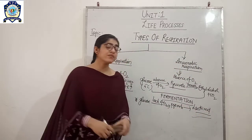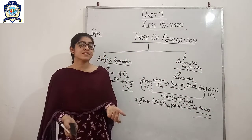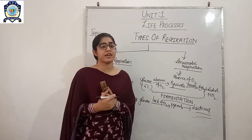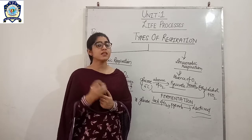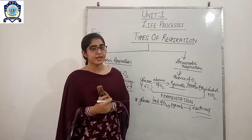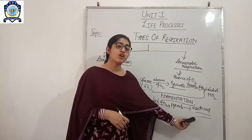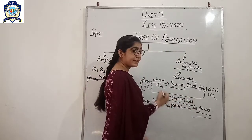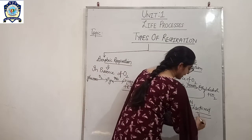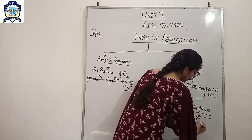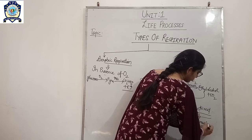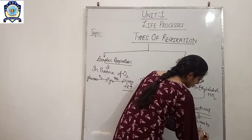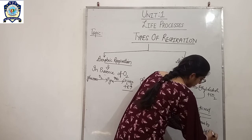You may have heard that if we do vigorous exercise, we get muscular cramps in our body. The reason for those muscular cramps is the formation of lactic acid in our muscles. This lactic acid accumulates in our muscles and causes muscular cramps.